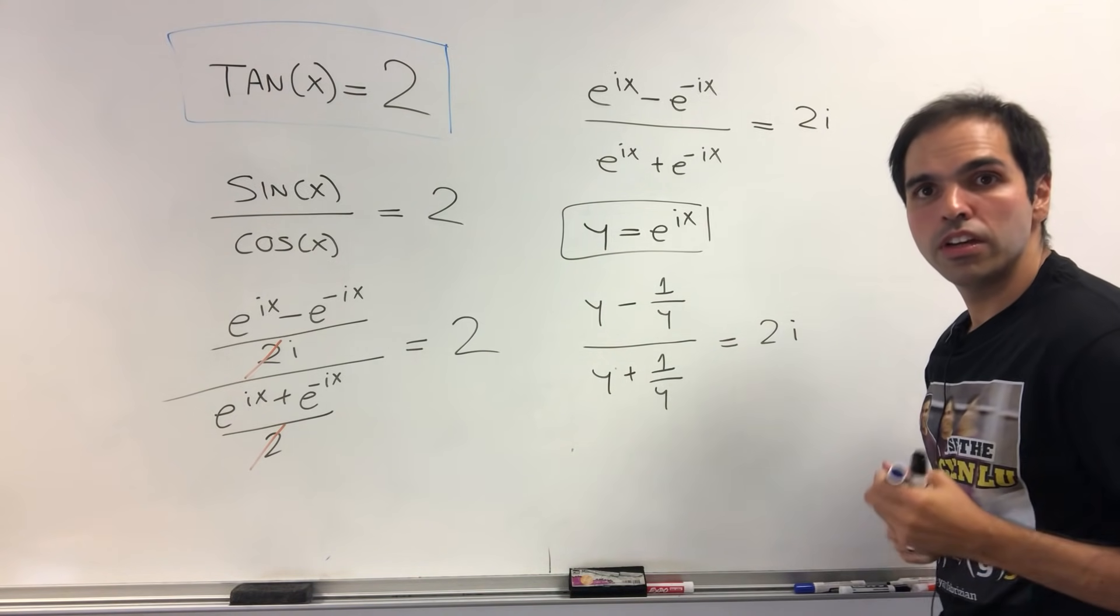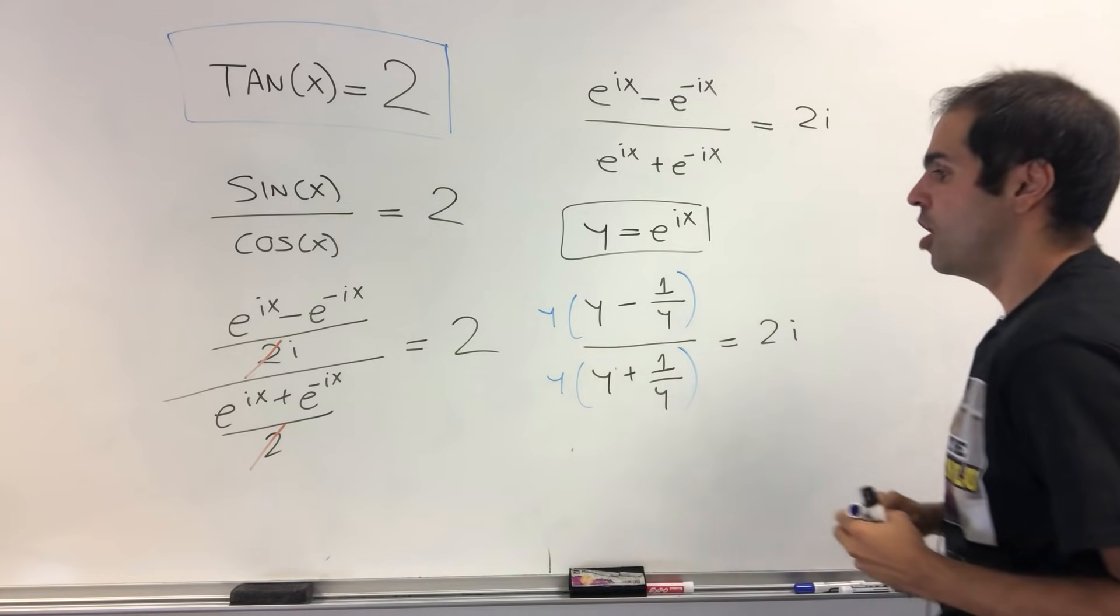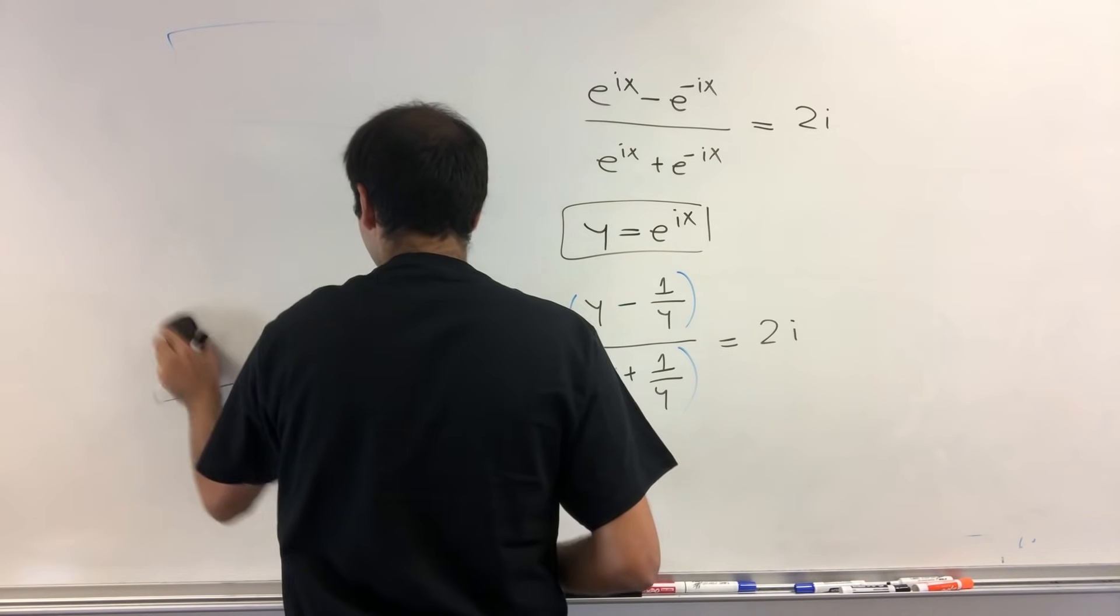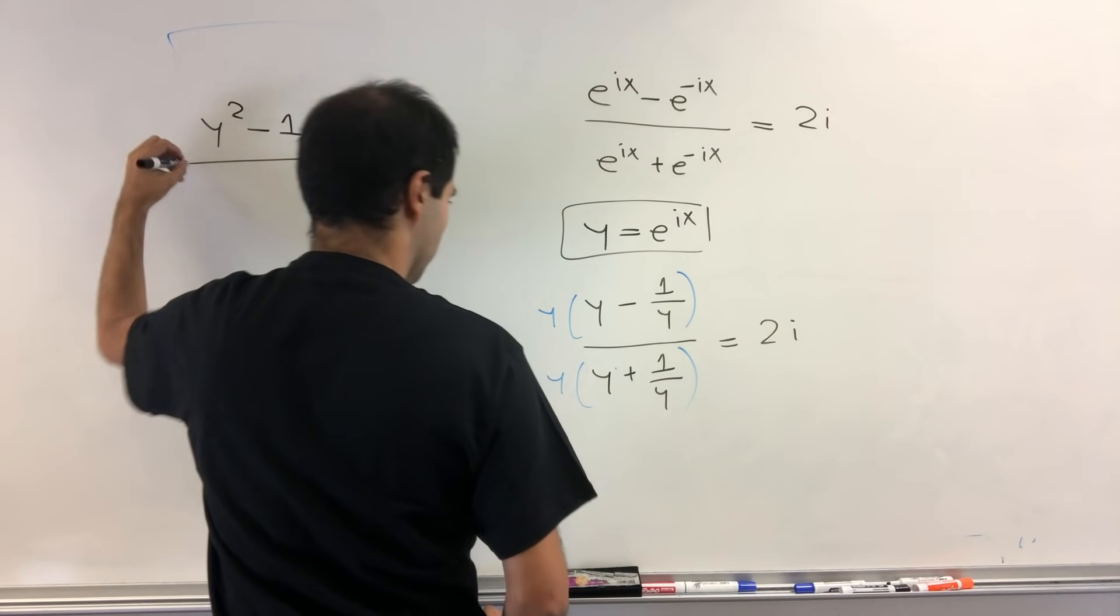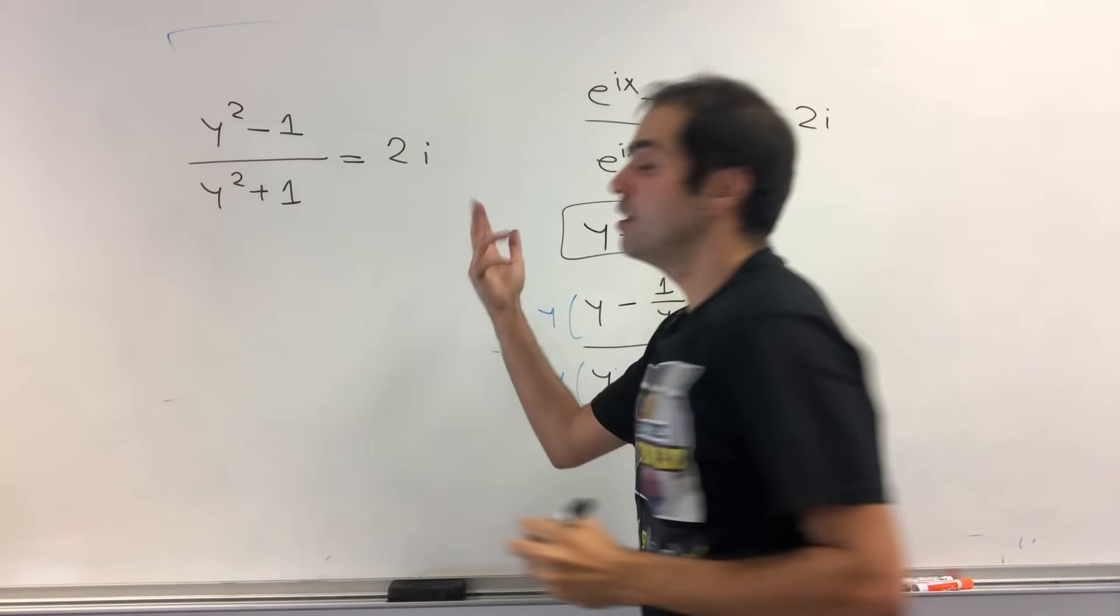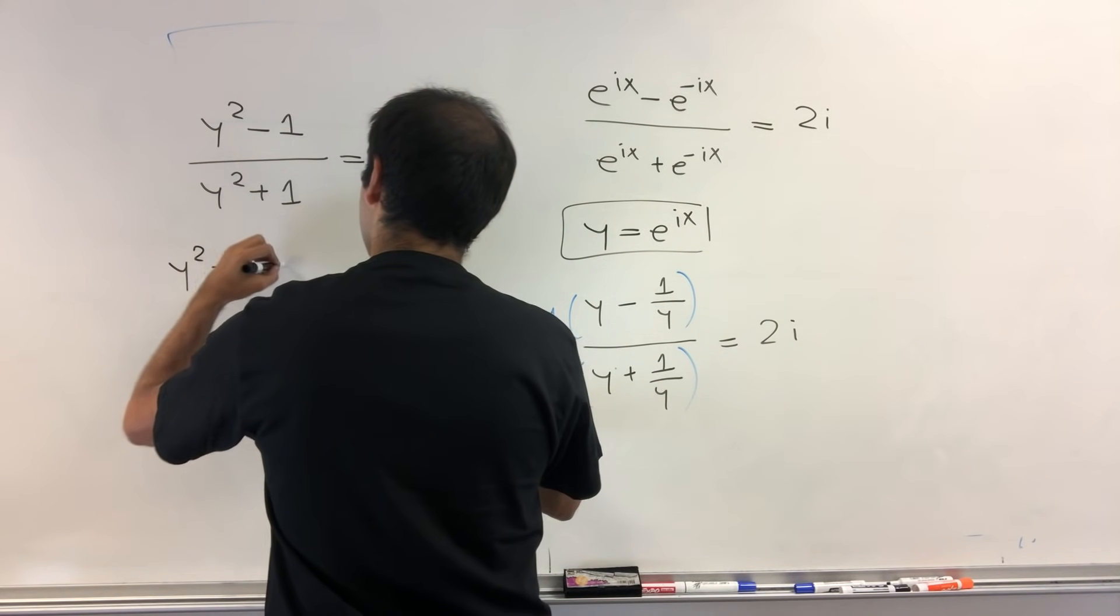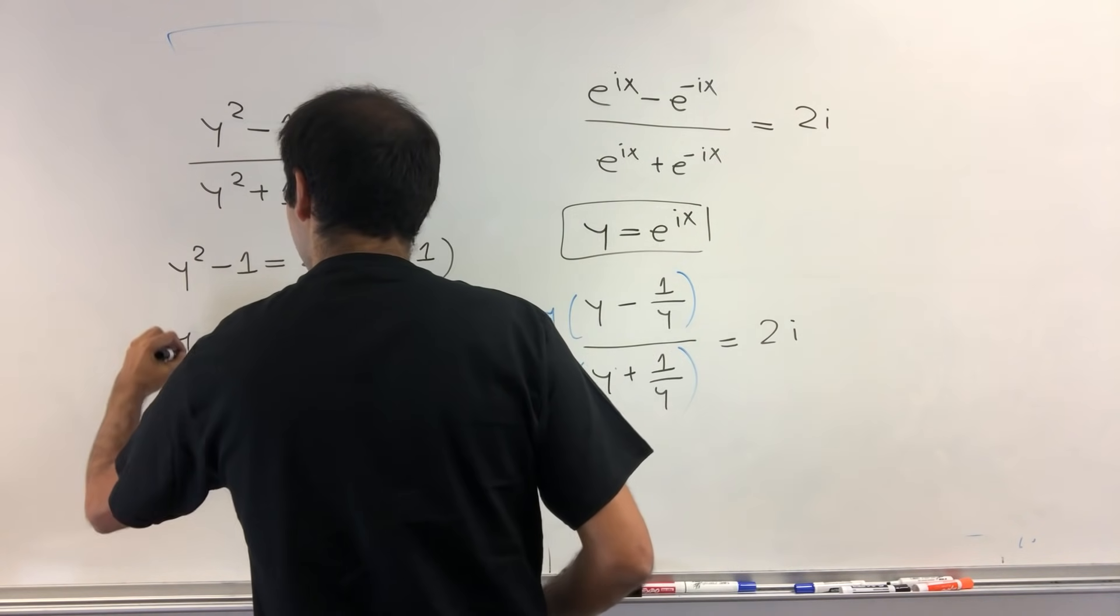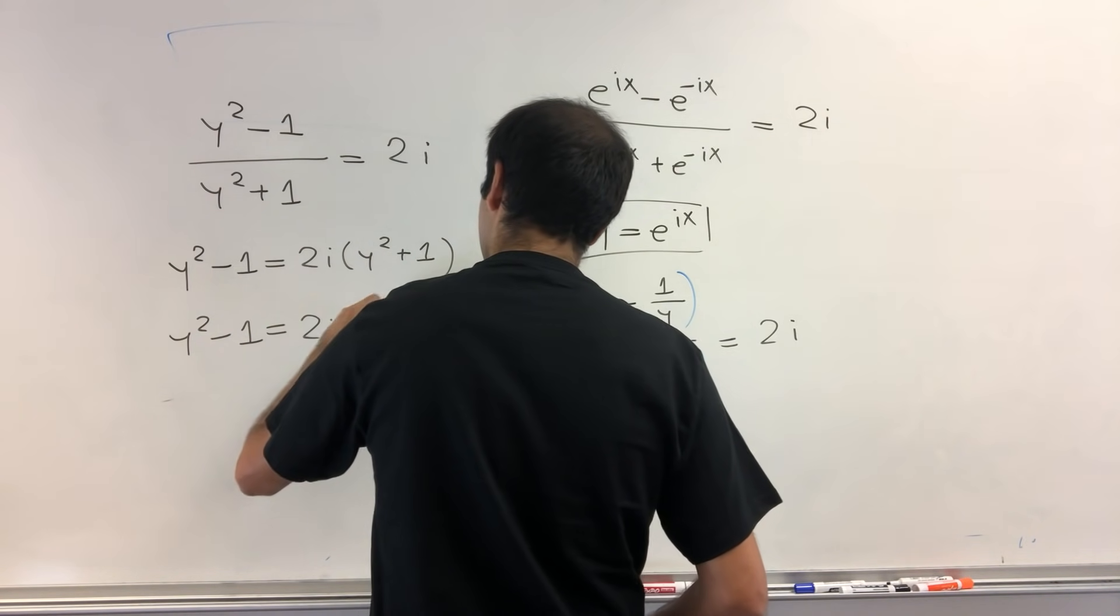And in order to get rid of the y on the denominator, just multiply both sides, I mean multiply top and bottom by y, and then what you get is the following equation. So y squared minus 1 over y squared plus 1 equals 2i. And now cross multiply. So y squared minus 1 equals 2i y squared plus 1. So y squared minus 1 equals 2i y squared plus 2i.